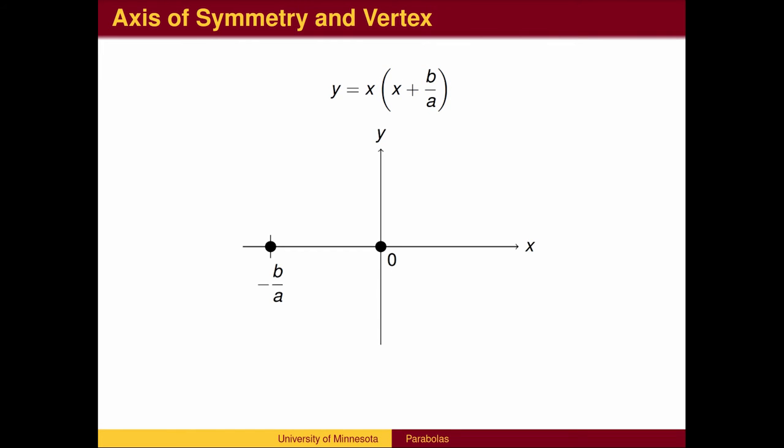Since the parabola is symmetric left and right, the axis of symmetry must be halfway between these two points. That is, the axis of symmetry must be at x equals negative b over 2a.